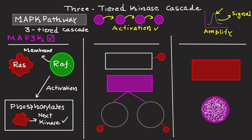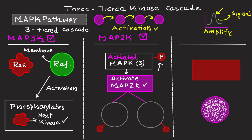The next step is MAP2K, which is MAP Kinase Kinase. Activated MAP3K phosphorylates and activates MAP2K — in this case, MEK1/2. MAP2Ks are dual-specificity kinases, meaning they are capable of phosphorylating both threonine and tyrosine residues on MAP kinases.